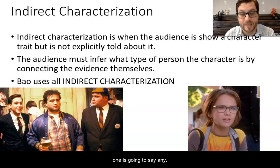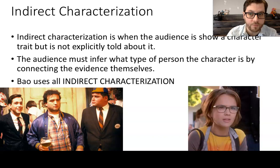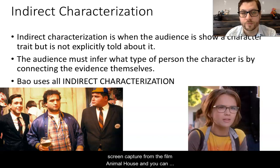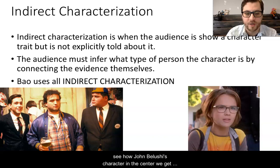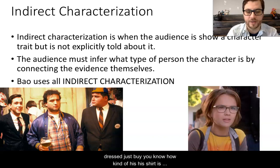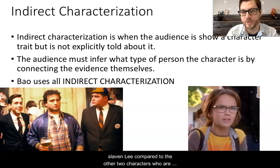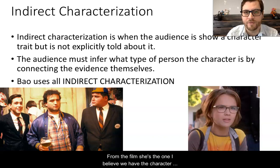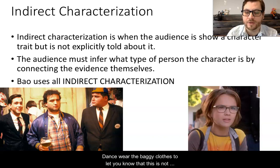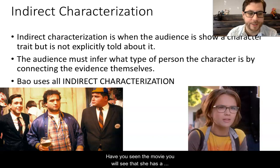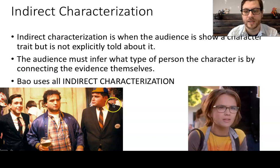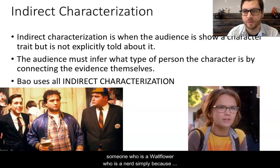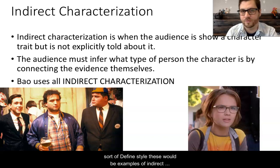In these two examples of indirect characterization: on the left we have a screen capture from Animal House, and you can see how John Belushi's character in the center gives us a sense of who he is — the rate at which he drinks, how he's dressed, his shirt slovenly compared to the other two characters in suit and ties. Next up we have almost a classic trope of indirect characterization from the film She's the One — a conventionally attractive actress put in glasses with a nondescript haircut and baggy clothes to signal that this is not a popular girl. She later has a makeover, but indirectly at the beginning we are shown she is a wallflower, simply because of the glasses and hair. These are examples of indirect characterization.